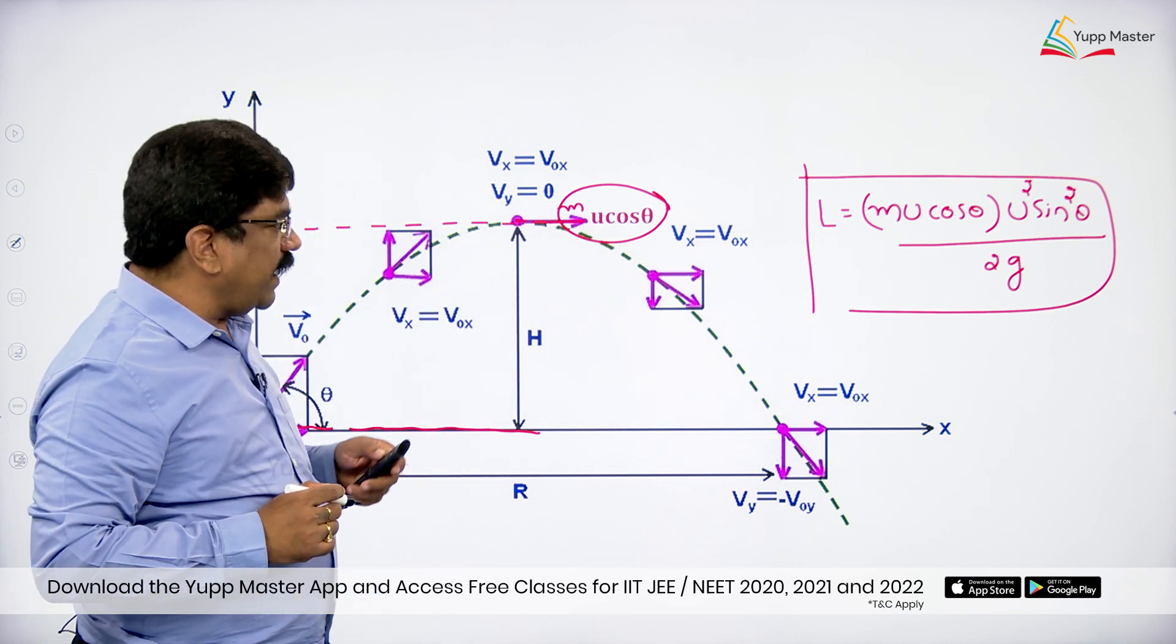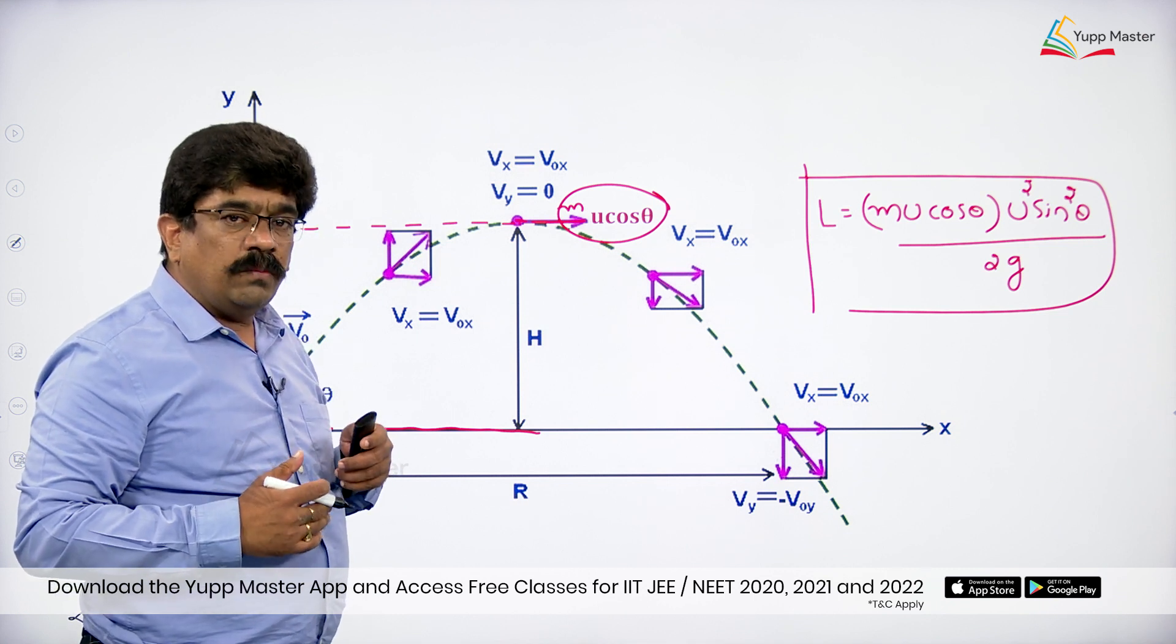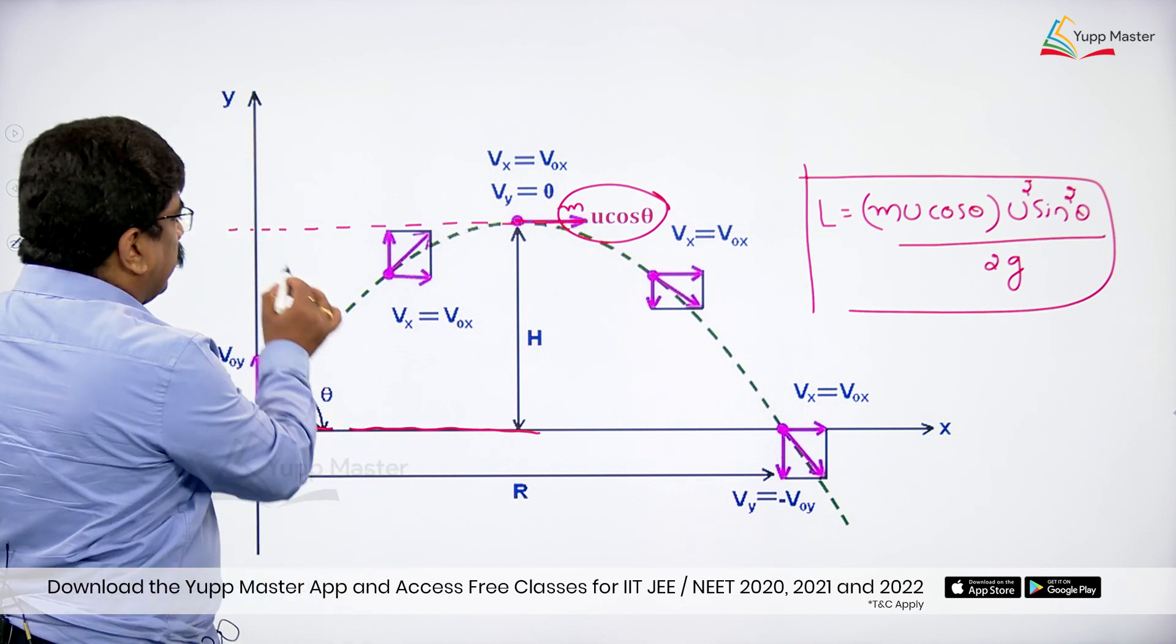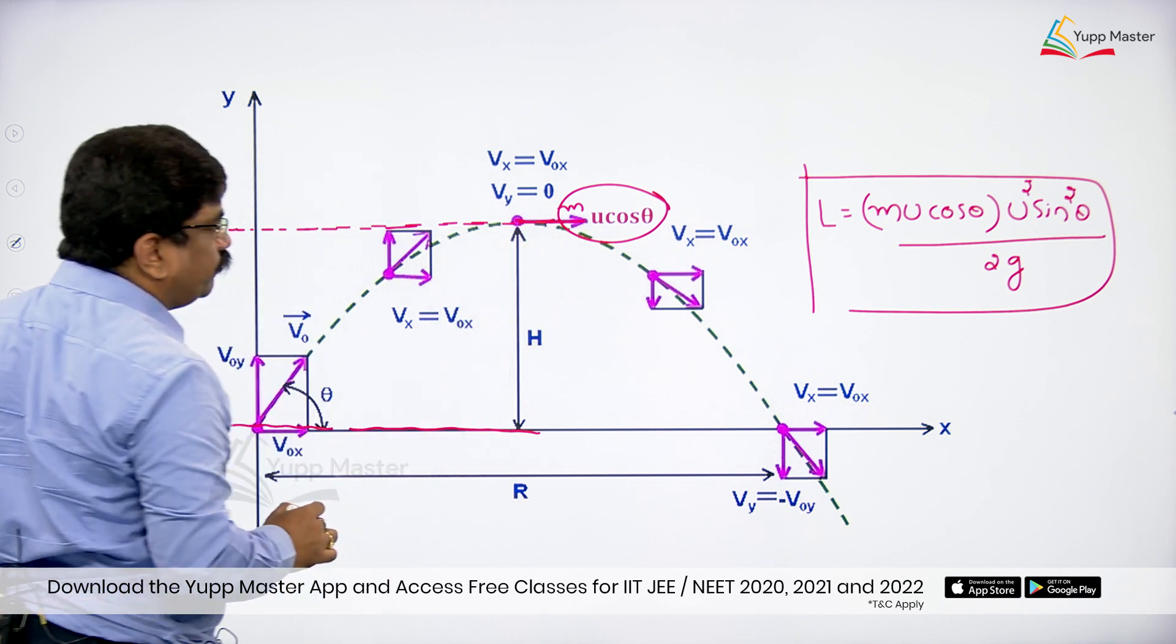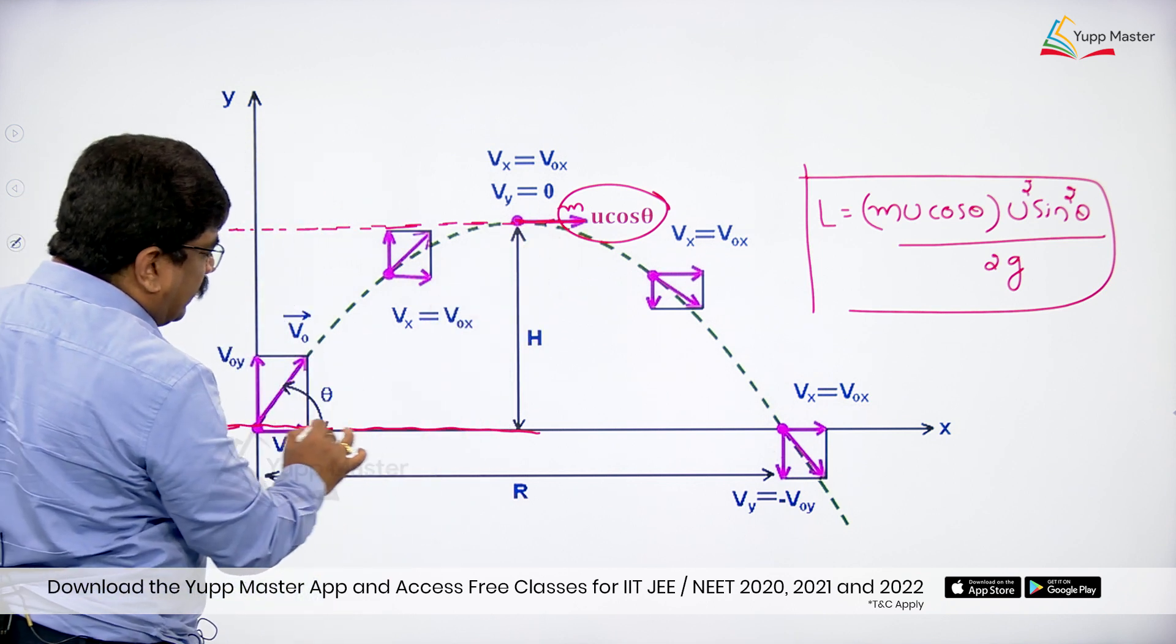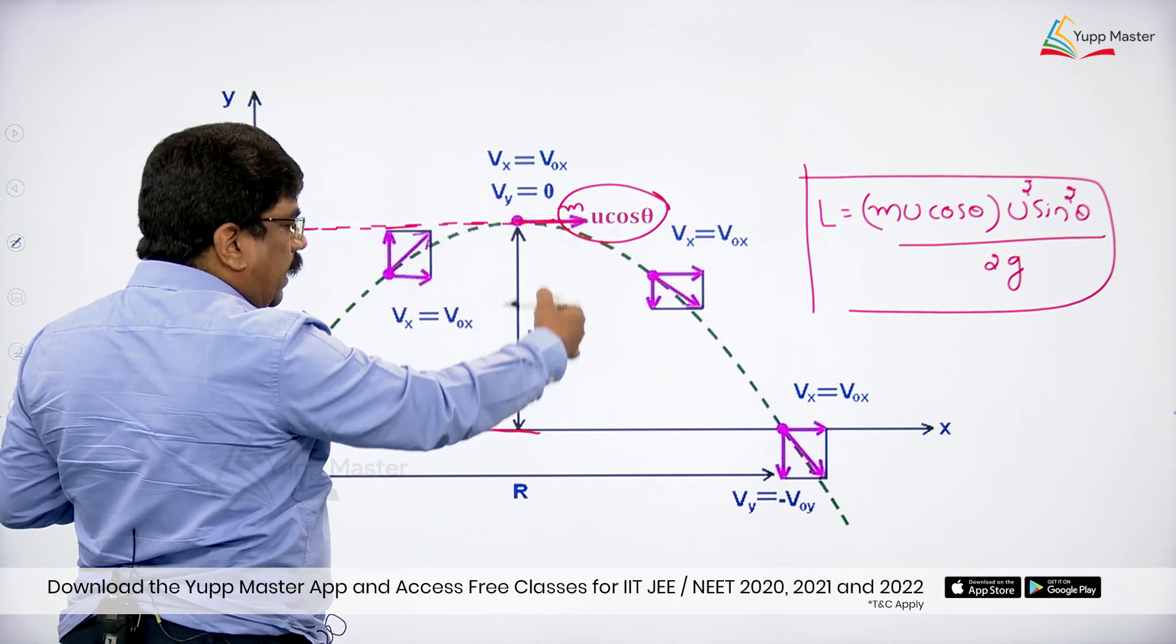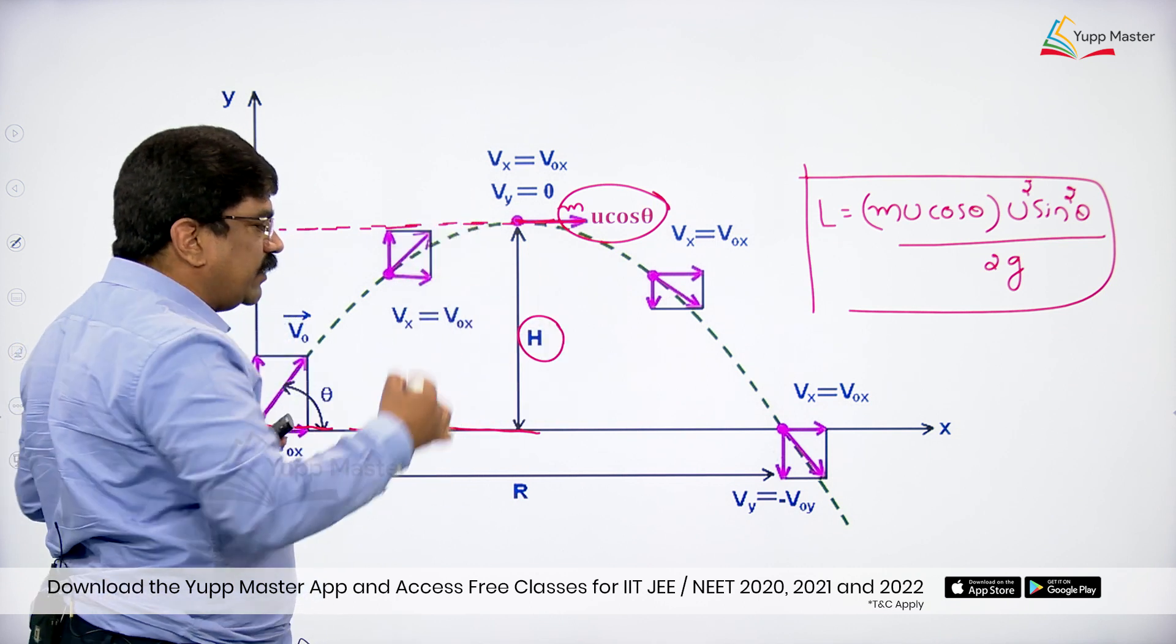Momentum of the projectile is mu cos theta. Then angular momentum means momentum multiplied by perpendicular distance. So here this is momentum direction and this is point under consideration. Perpendicular distance between momentum and point under consideration is equal to capital H.